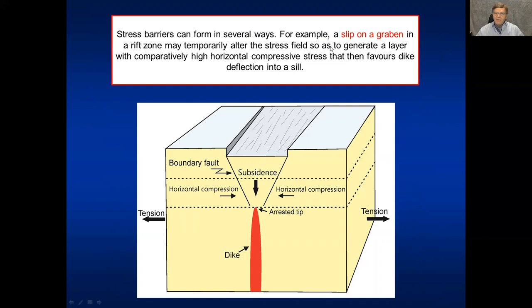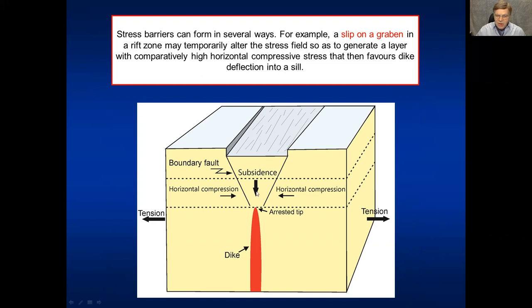Stress barriers can form in many ways. One — perhaps surprising — is that rapid subsidence on a graben in a rift zone can temporarily flip the stress field so that sigma one, which was vertical and favoring graben subsidence, becomes horizontal for a while. When the graben presses down, it may change the stress field so it becomes horizontal compression, causing sigma one to become horizontal, and the dike becomes either totally arrested or possibly deflected into a sill at that contact.